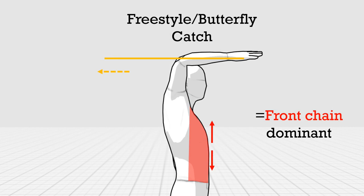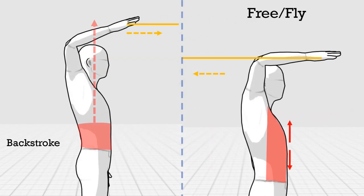This type of catch is different from the previous video that we did. The backstroke catch favors the back chain while the free and fly catch favors more of the front chain.